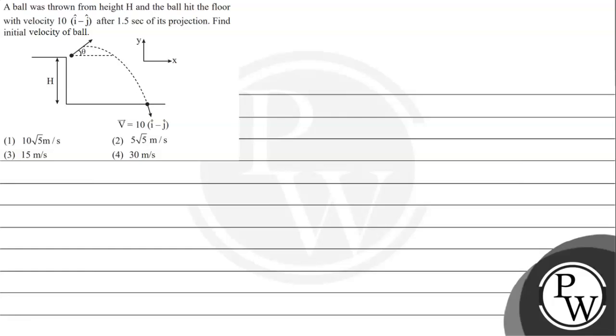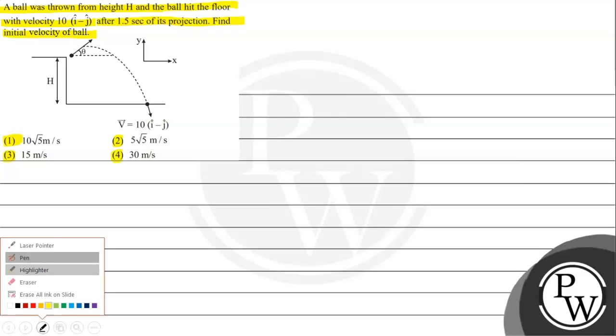Hello, let's read the given question. A ball was thrown from height H and the ball hit the floor with velocity 10i cap minus j cap after 1.5 seconds of its projection. We need to find the initial velocity of the ball. Option 1: 10 root 5 meter per second, Option 2: 5 root 5 meter per second, Option 3: 15 meter per second, Option 4: 30 meter per second.